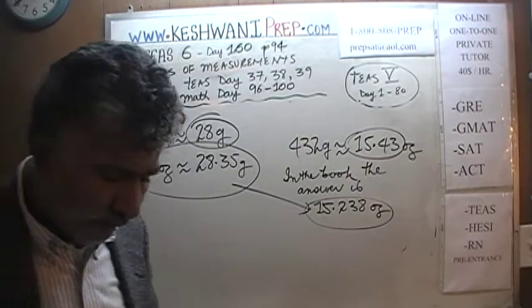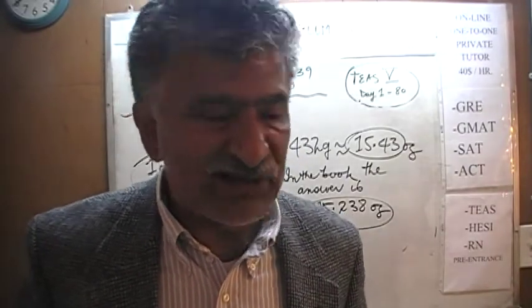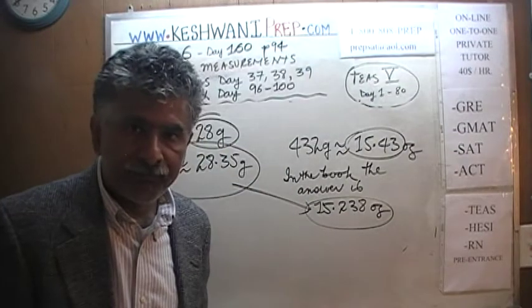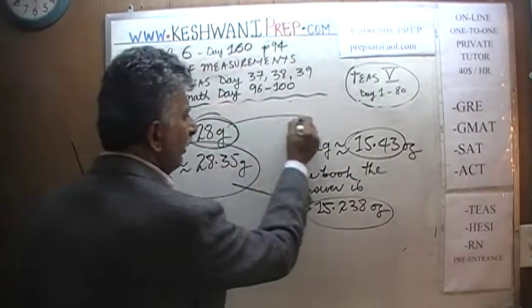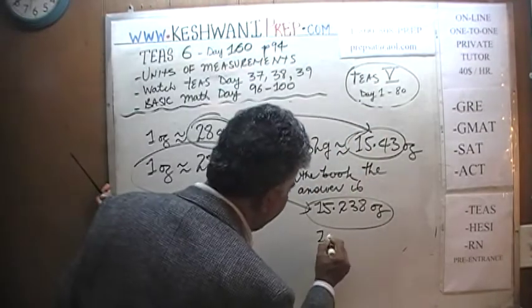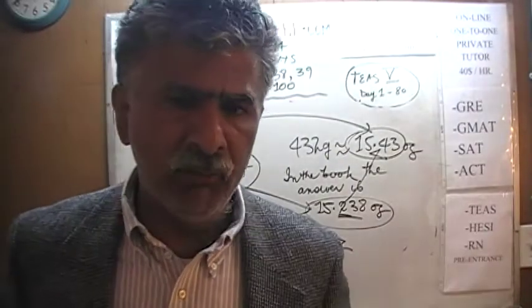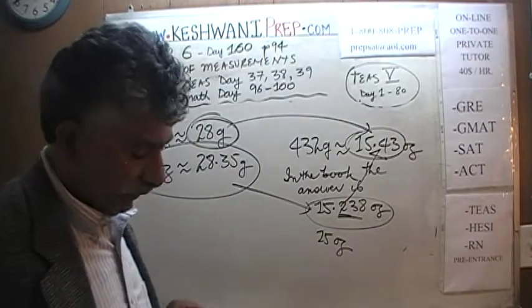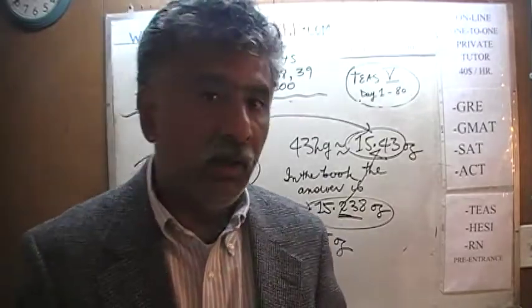Using 28 grams per ounce is good enough for the exam. Remember the nature of the beast: this is a multiple-choice exam. They're not asking for a precise answer — they're asking you to recognize which of four answer choices equals 432 grams. The answer choices are far apart, so if you arrive at 15.43 and one choice says approximately 15 or 15.2 ounces, that's your answer. Learn to approximate and save time. That was lesson number 160 — see you tomorrow.